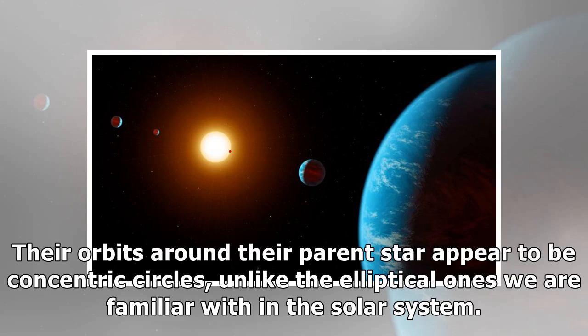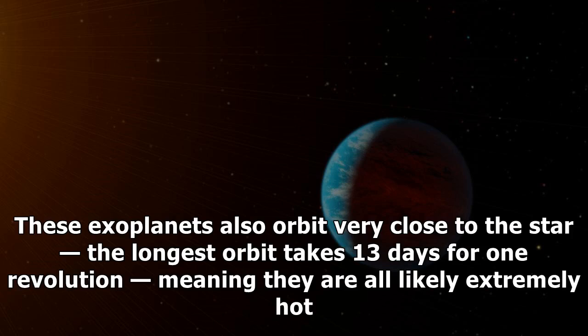Their orbits around their parent star appear to be concentric circles, unlike the elliptical ones we are familiar with in the solar system. These exoplanets also orbit very close to the star, the longest orbit takes 13 days for one revolution, meaning they are all likely extremely hot.